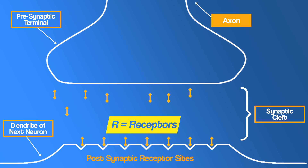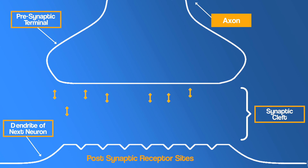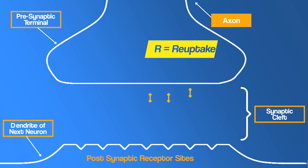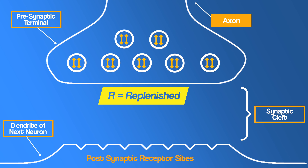The neurotransmitter is converted back into an electrical impulse and carries on down the axon of the next neuron. E for enzymes: enzymes are released to break down any neurotransmitters still in the synapse. R for reuptake: some neurotransmitters go through reuptake, where any excess neurotransmitters are reabsorbed back to the presynaptic terminal. R for replenished: vesicles are replenished with new and reused neurotransmitters, ready for the next impulse.